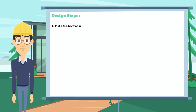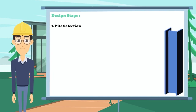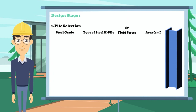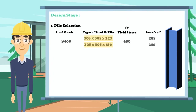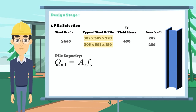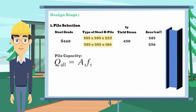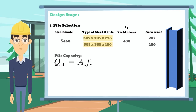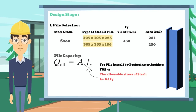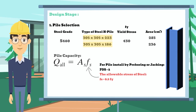First, select the type of steel H-Pile. Here are the typical types of steel H-Pile used in Hong Kong. The loading capacity of the pile is calculated by this formula, as we have mentioned before. For piles installed by jacking or pre-boring, the factor of safety is 2. Therefore, the allowable stress of steel will become half of Fy.